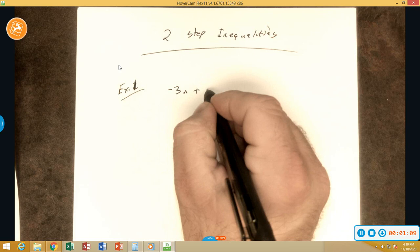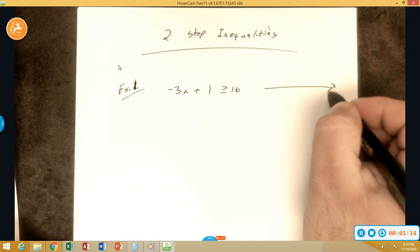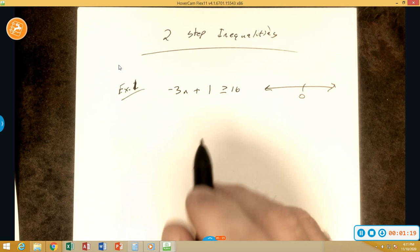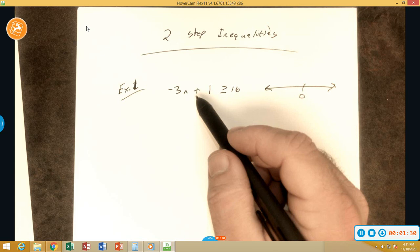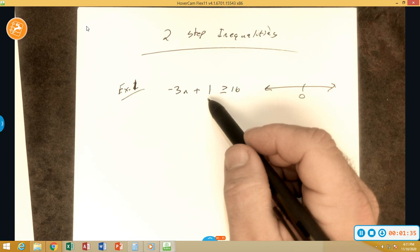So let's do negative 3n plus 1 is greater than or equal to 16. We're not ready yet to graph over here, but we can show where zero is. All right, so the first thing we're going to do, we realize that this is a two-step. Just like in the other one, we do PEMDAS, so we're supposed to do multiply first and then add, but since this is an inequality we're going to treat it like an equation.